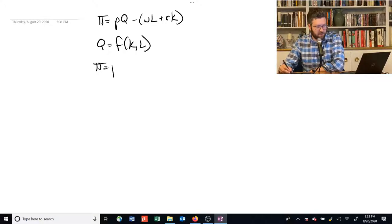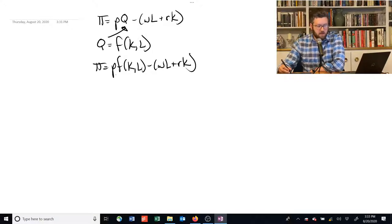And now we have that profit is equal to P times F of K and L minus WL plus RK. So I just substituted that in. Let's go one step further. For this first run through, let's assume that this is a short-run problem.